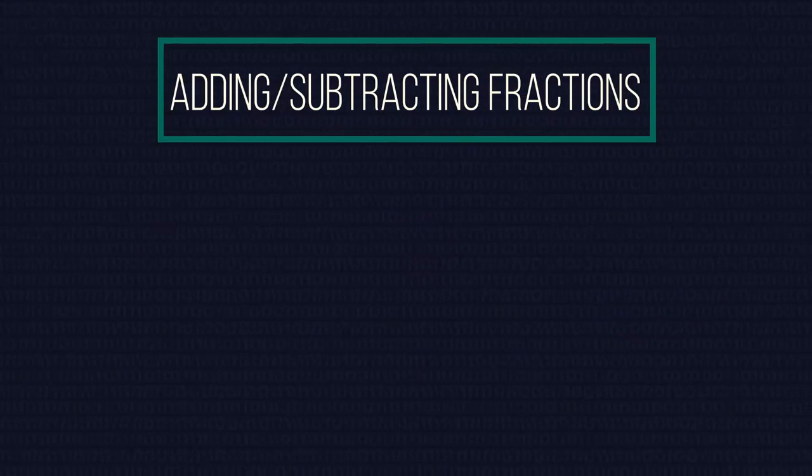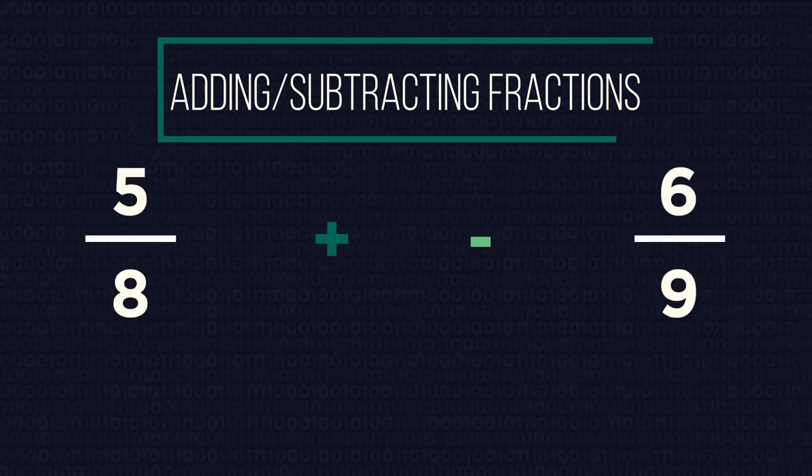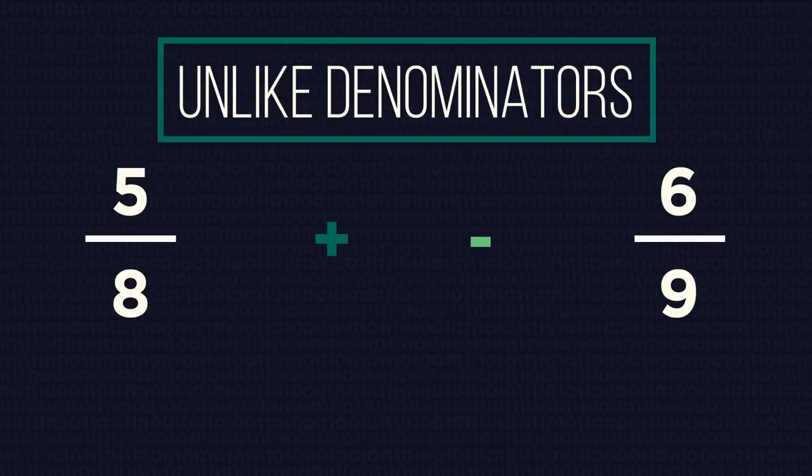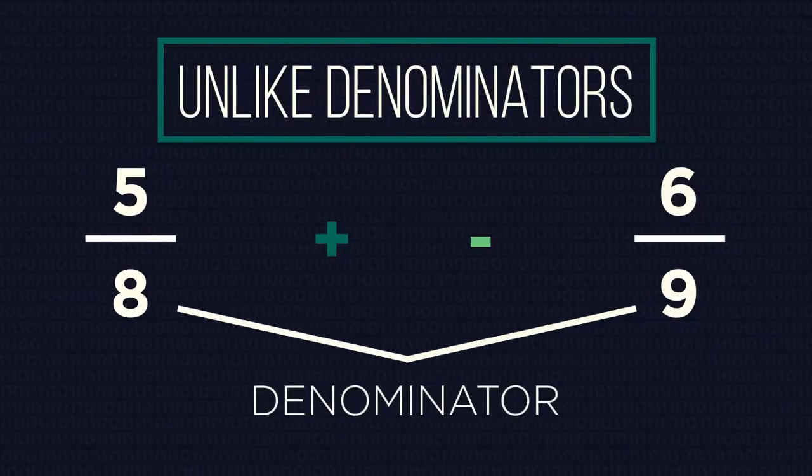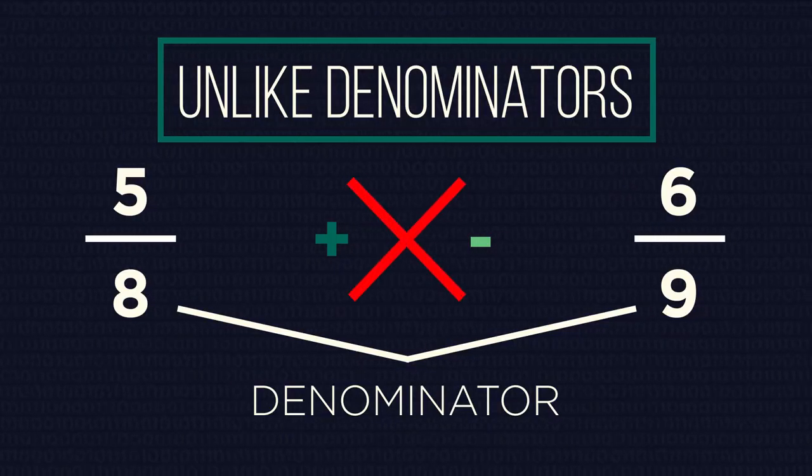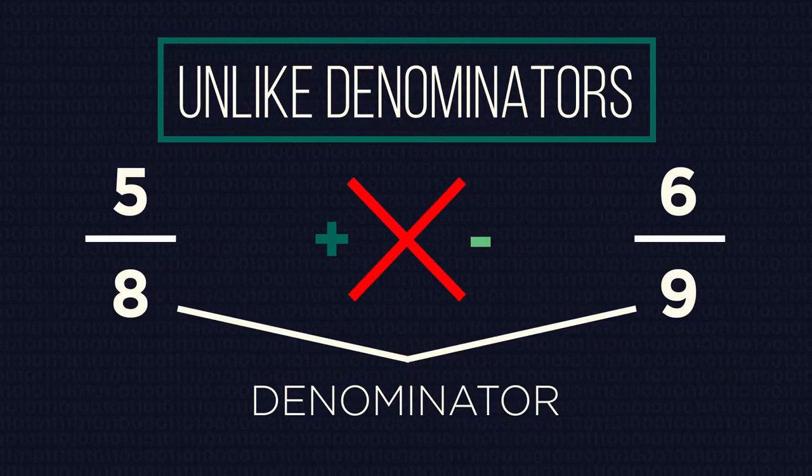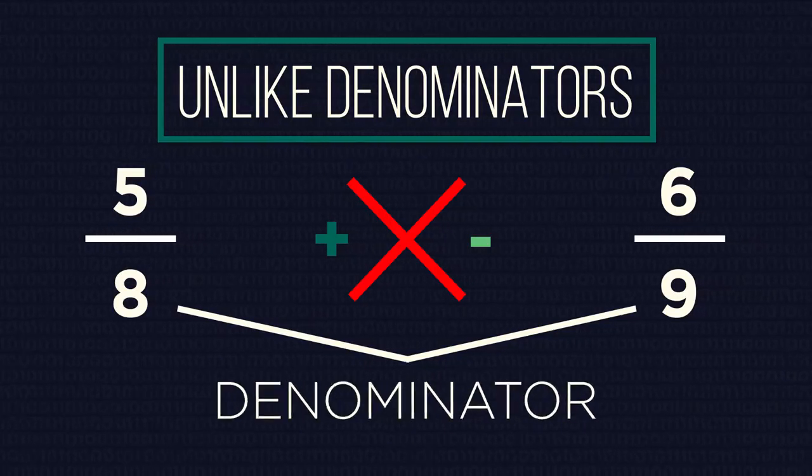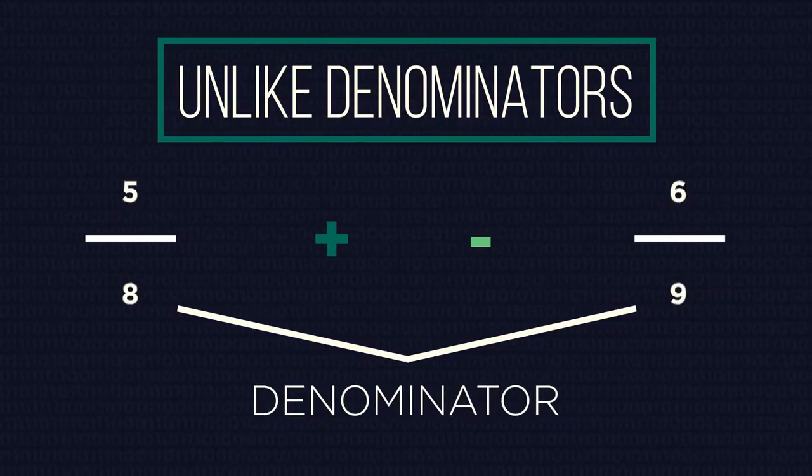What do we need to know about adding and subtracting fractions? Fractions with unlike or different denominators cannot be added or subtracted. In other words, you can only add and subtract fractions if the denominator, that's the bottom part of the fraction, is the same.